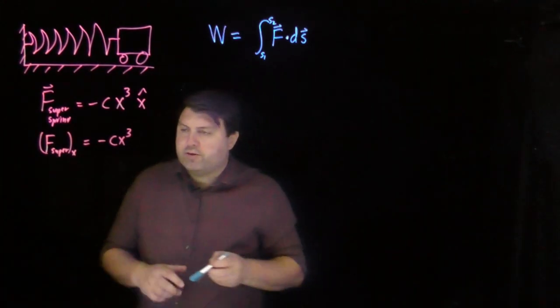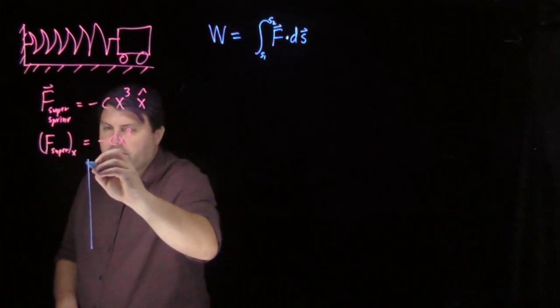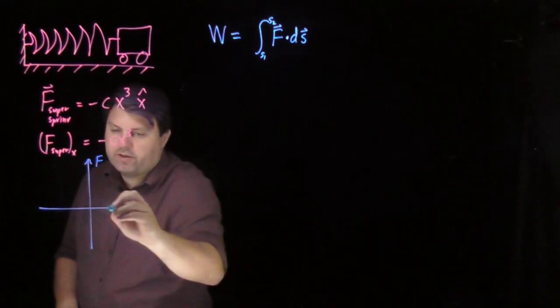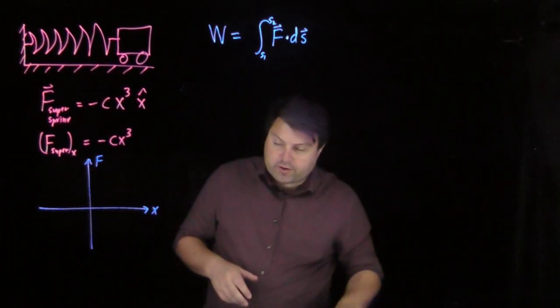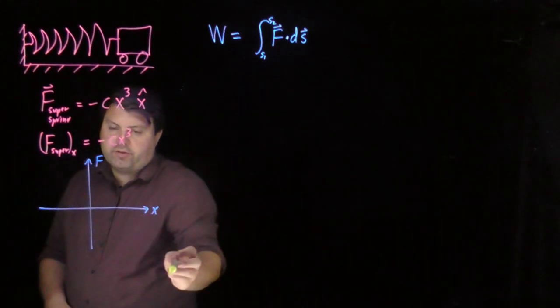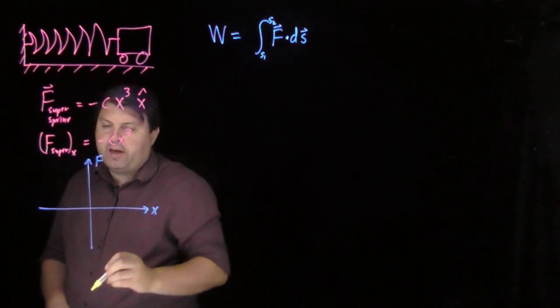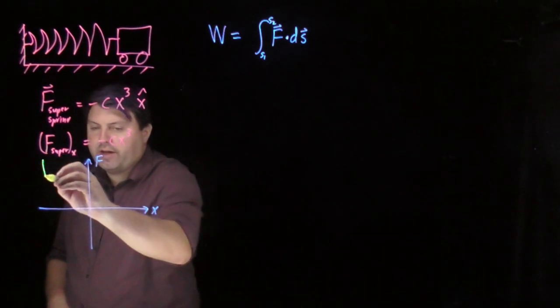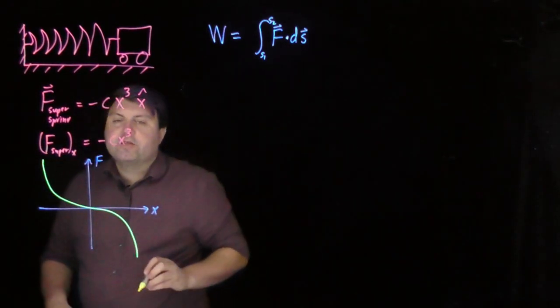So if we want to draw this, our force versus x, for the spring we just drew a straight line with slope of negative k. Now for this, we're going to have something like that.